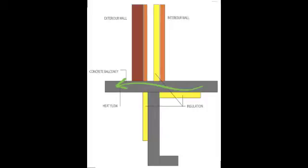The problem of thermal bridging is presented when the rebar is heated by the air inside the house, or outside the house. That heat transfers through the wall at a faster rate than it normally would, causing heating problems. The rebar runs right through the insulation outside the house, providing a direct path or bridge for unwanted heat to escape or enter the house.